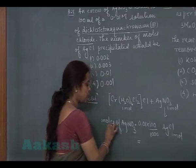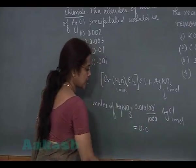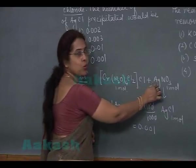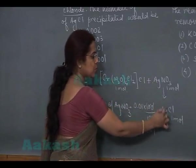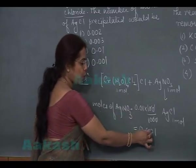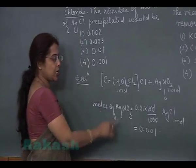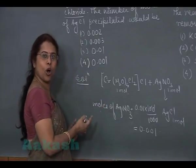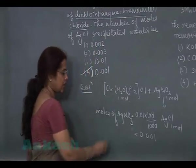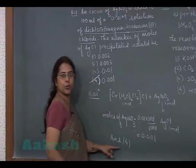So number of moles of AgNO3 added is 0.001. If addition of 1 mole AgNO3 precipitated 1 mole AgCl, then addition of 0.001 mole of AgNO3 will precipitate 0.001 mole of AgCl. So the correct option is 4th one. The answer of question will be option number 4.